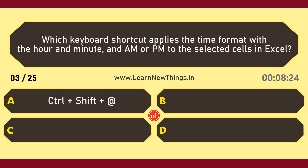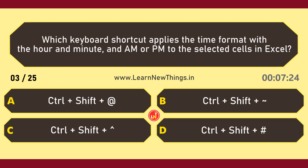Which keyboard shortcut applies the time format with the hour and minute and AM or PM to the selected cells in Excel? Ctrl, Shift, At (@).